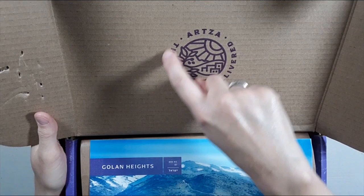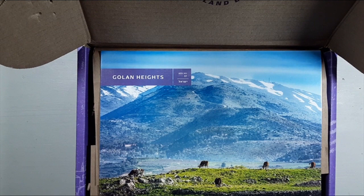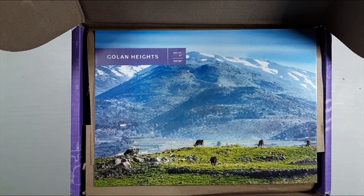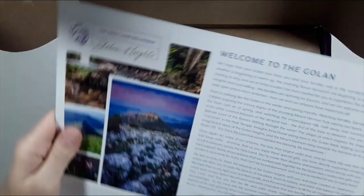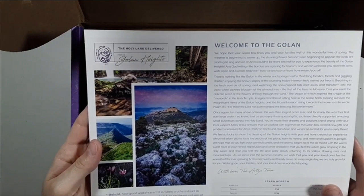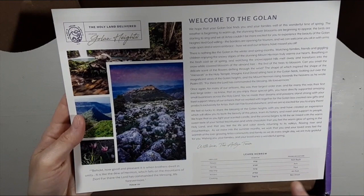It has the beautiful Artsa logo here on the box, and this is again the Golan Heights box. This is box number seven Golan Heights, and it has this beautiful picture here. On the back it has Welcome to the Golan, and their theme here is the Holy Land Delivered. It says Learn Hebrew, it has some English words, Hebrew words, how they're written, and then the pronunciation of these words.